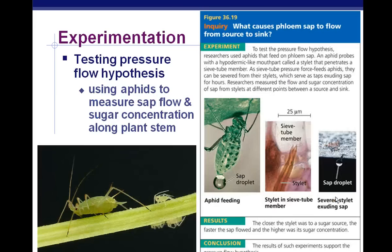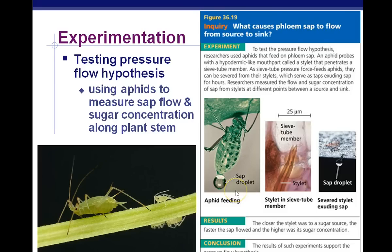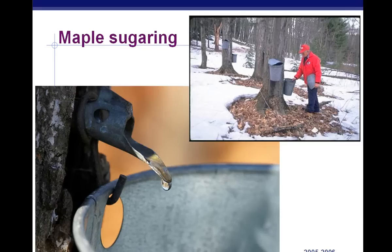We can demonstrate this with experiments — the heads of aphids are cut off after they bite into the phloem, and the rate at which sugar leaves their heads is measured. This shows positive pressure, a push from the leaves, not negative pressure. This is also how maple sugaring works: positive pressure from the leaves pushes the phloem sugar — maple syrup — into buckets. That ends Part 2 of Chapter 36 Notes.